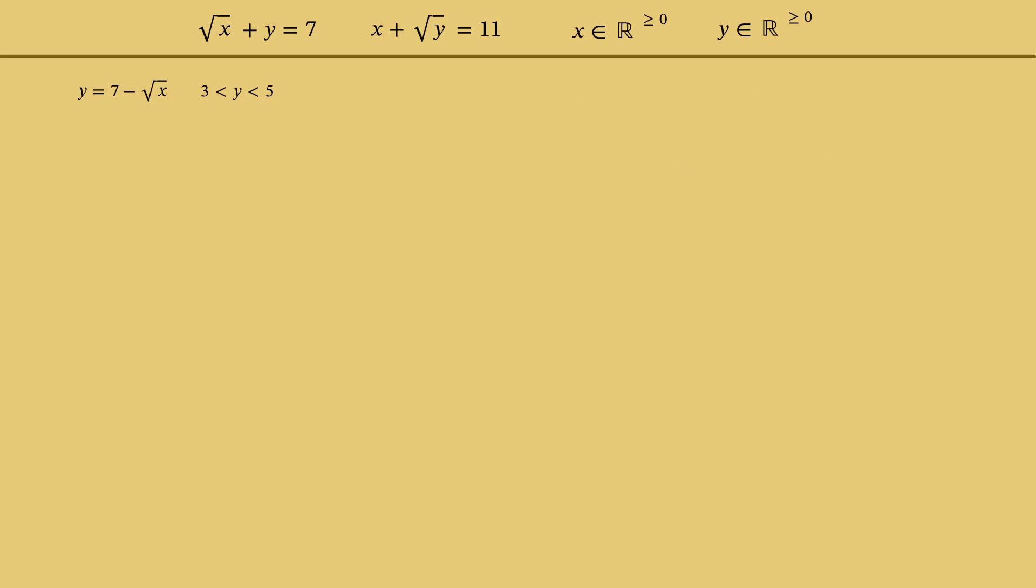The only integer satisfying the inequality for y is 4, which happens to be a full square. So, let's try y equals 4. Substitute 4 for y into the given system of simultaneous equations and simplify. We obtain consistent equations. If x equals 9, then indeed, square root of x equals 3. This means that one solution is found: x equals 9, y equals 4. And we are looking for other solutions.